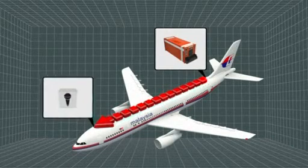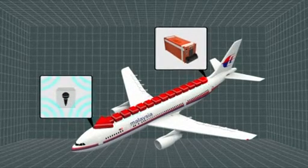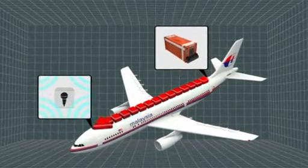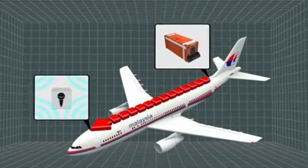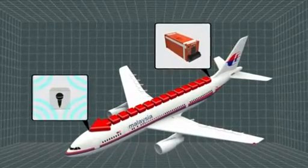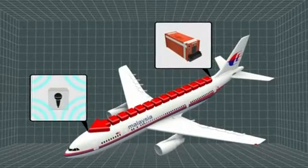The cockpit voice recorder uses microphones in the flight crew's headset and a centrally located microphone in the cockpit to record conversations, radio communications, and ambient noise.